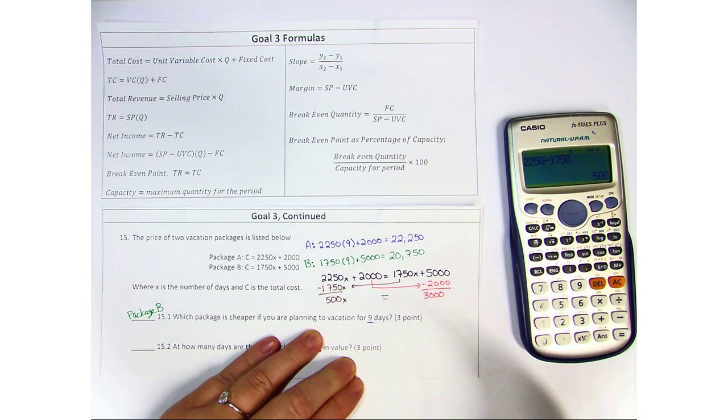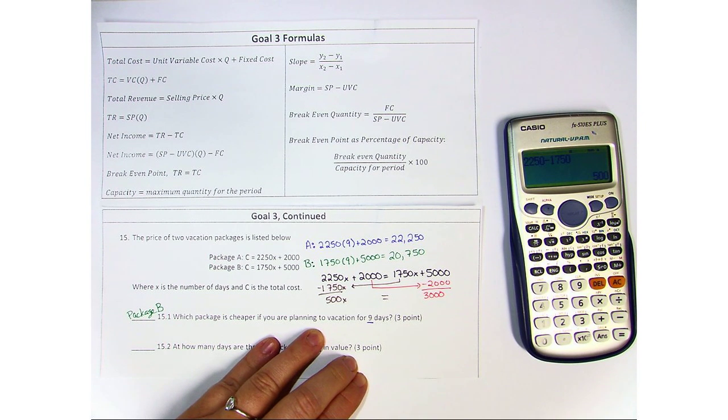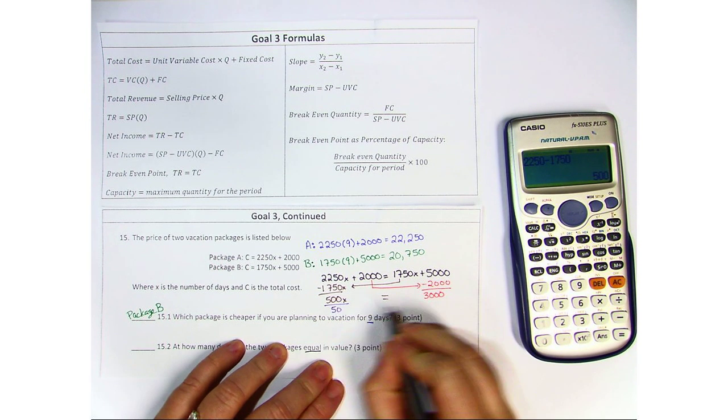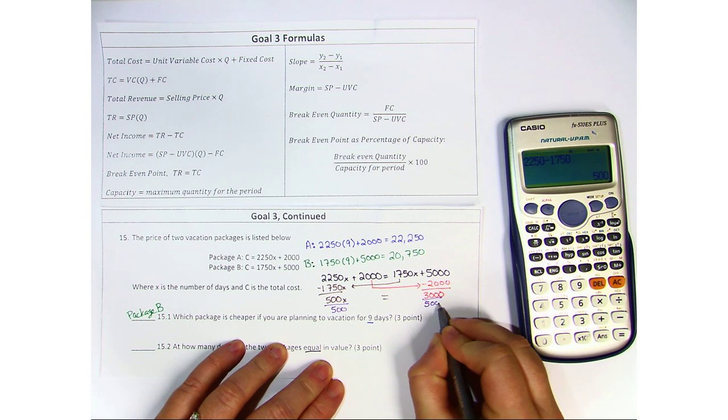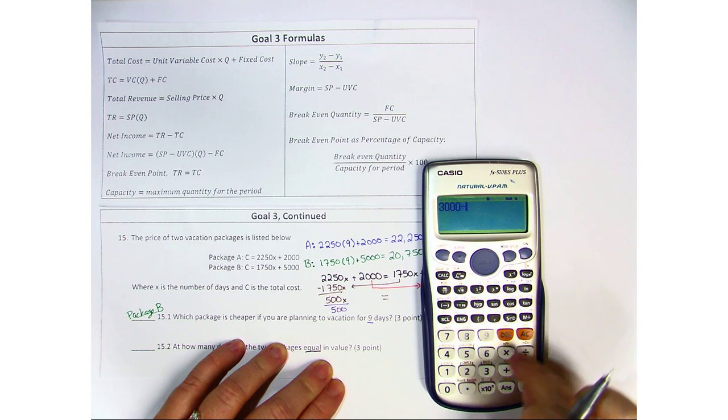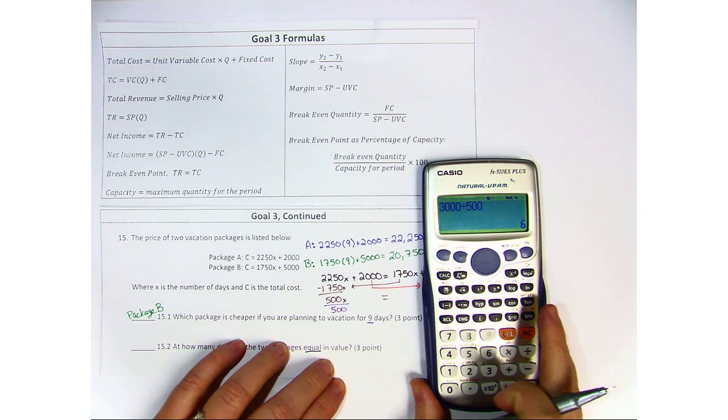So these two are equal to each other. In order to solve for x, we have to divide both sides by 500. So 3000 divided by 500 is 6.